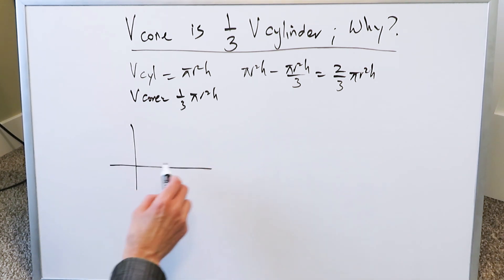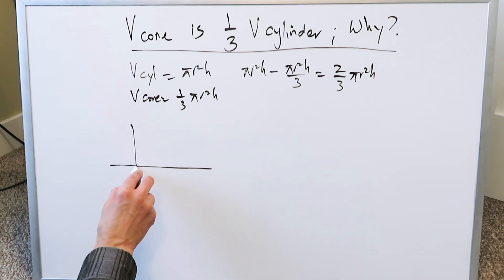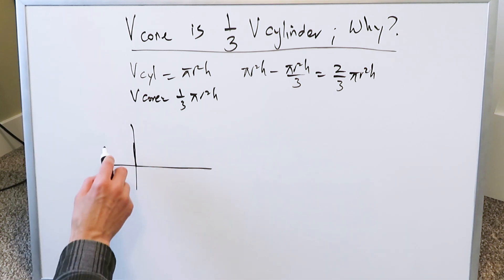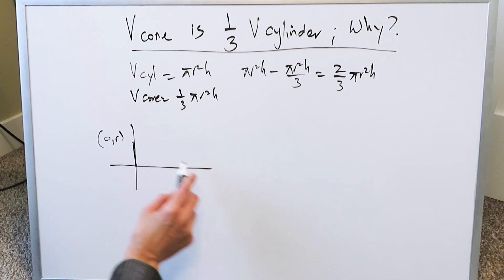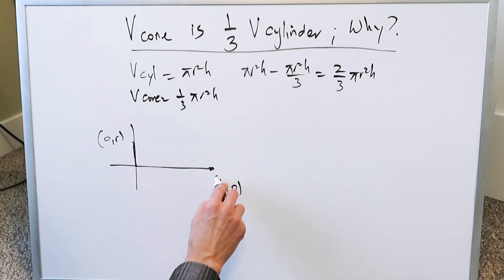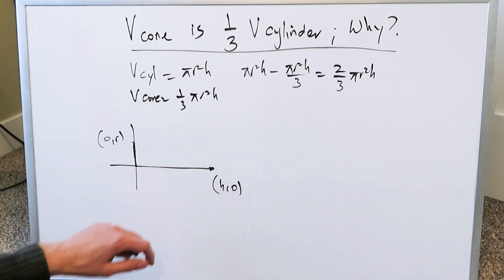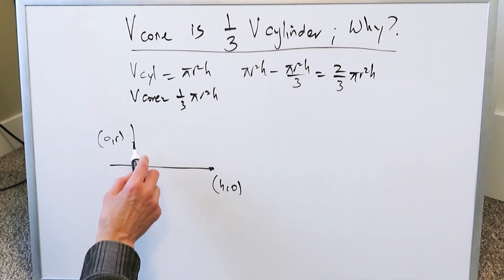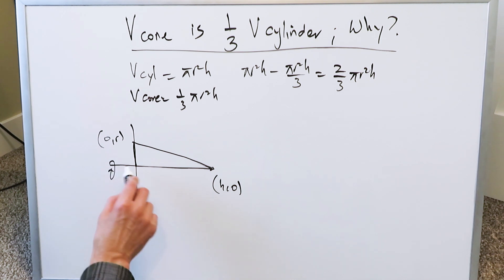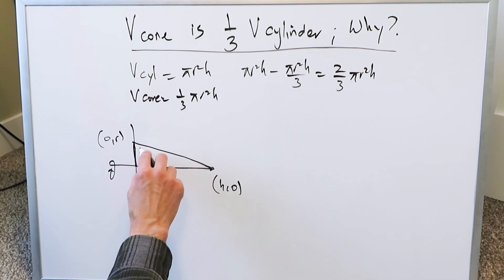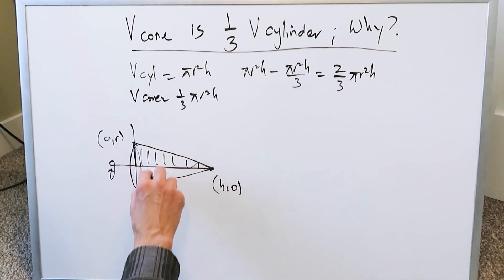If you look at a representation where they have the same radius and the same height, you can place the radius along the y-axis with a point at (0, r), and the height along the x-axis — because you've laid your cylinder flat or put your cone horizontally. If you connect these two points, you've drawn a diagonal line. If you rotate this diagonal line and the region below it around the x-axis, you end up developing a three-dimensional cone.